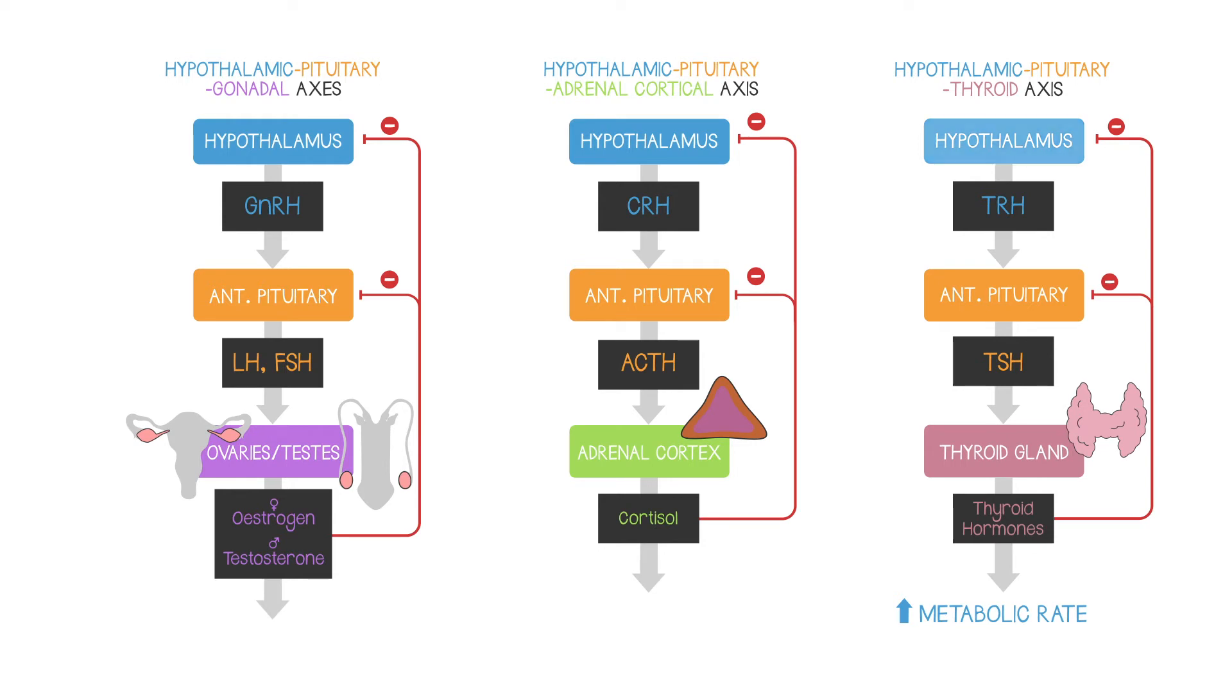In each case, the hypothalamus produces a releasing hormone which controls the anterior pituitary. The anterior pituitary produces a special hormone to control another ductless gland in the body, and that ductless gland produces a third hormone. Negative feedback from the third hormone is used to prevent levels increasing too much and getting out of control.